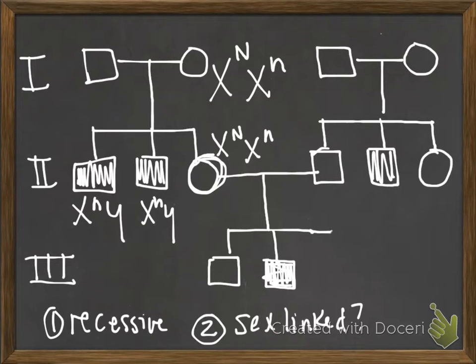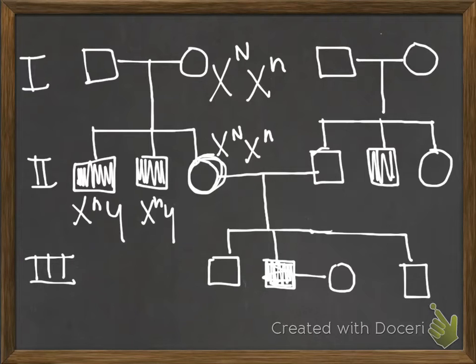We're going to erase this brother for a moment and give this guy room to meet a lovely person who he's going to reproduce with. If he reproduces with her, and we don't know anything about her family, and they have an affected daughter. If she is X big N, X little n, she's a carrier, and he's X little n, Y. You could actually have a daughter who is X little n, X little n. So it's rare, but it's possible.